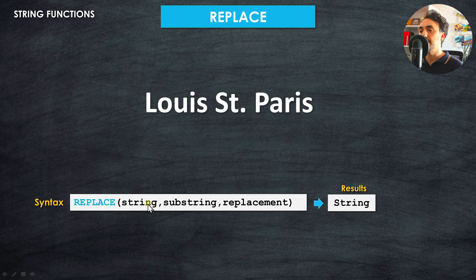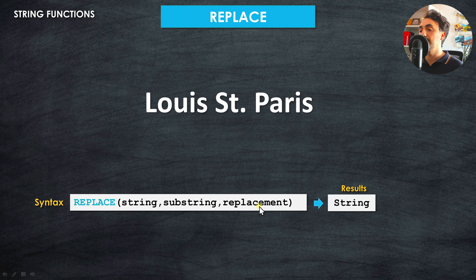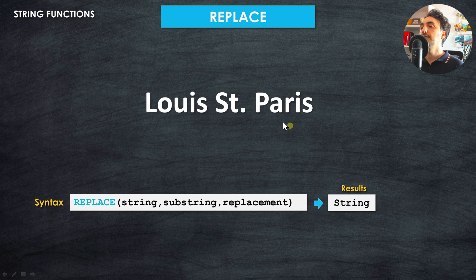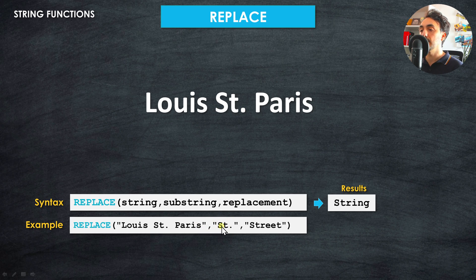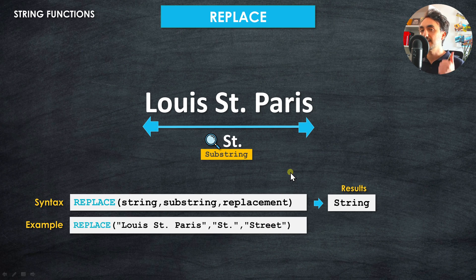The first argument is the string — the original text you want to manipulate. The second is the substring you want to replace. The third is the replacement — the new substring. The output is also a string value. So to solve this example, we use replace, then our text, then the old substring 'St.' and the new one 'street'.